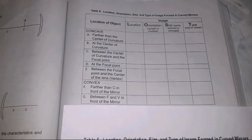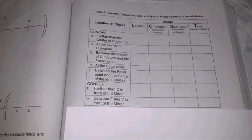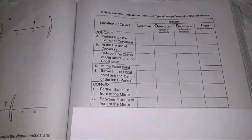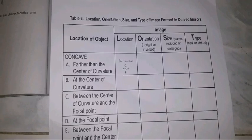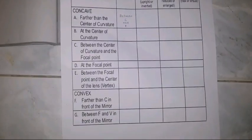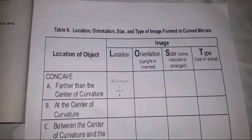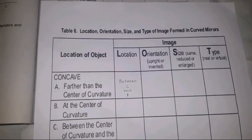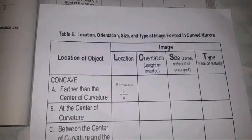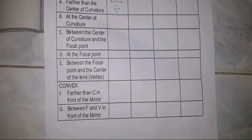Procedure number 2. Use a table similar to table 6 below to summarize the characteristics and location of the images formed. Table 6. Location, orientation, size, and type of image formed in curved mirrors.